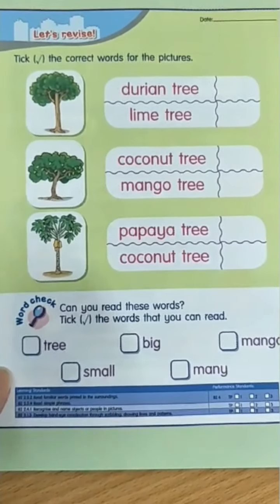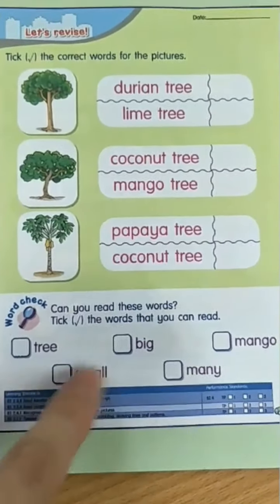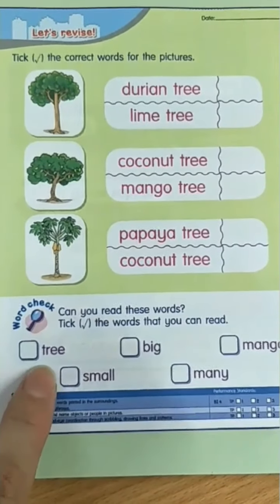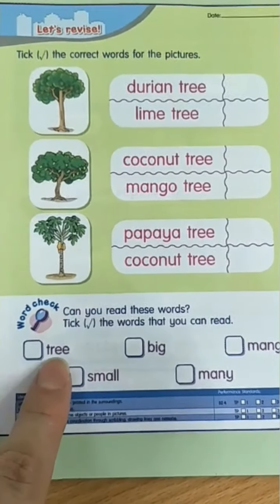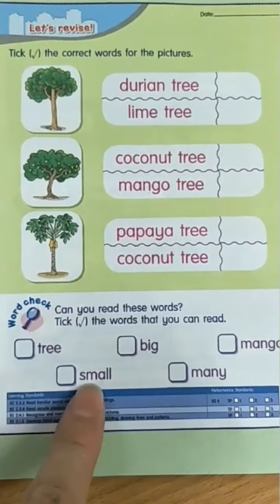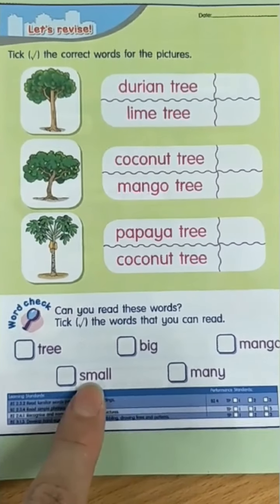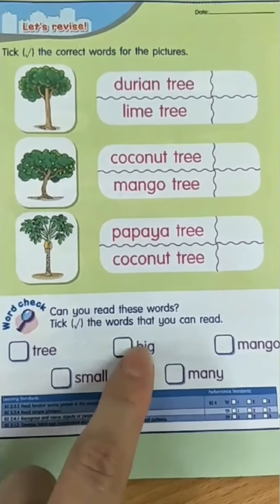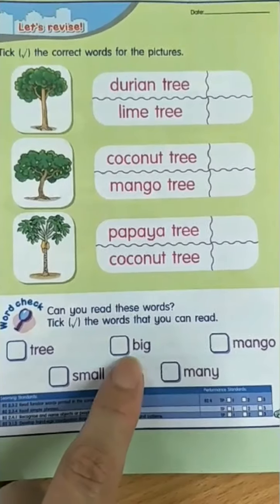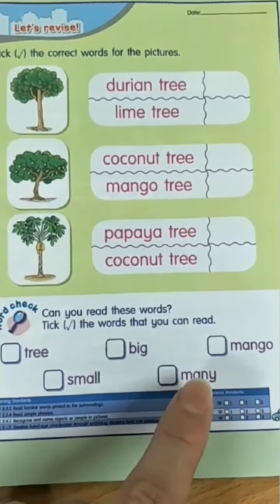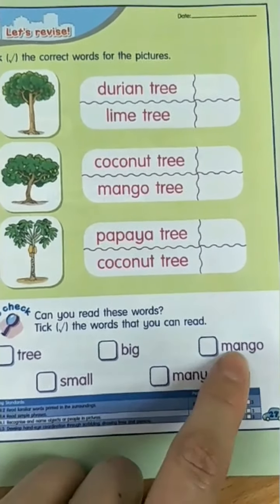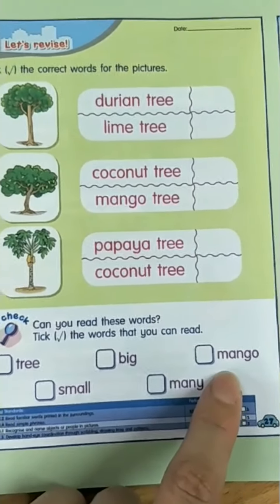Next, could you read all these words? Let's read together. Tree. Small. Big. Many. Mango.